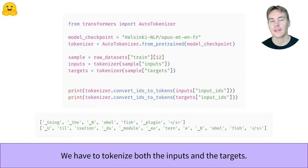There is a trap there though, as if you tokenize your targets like your inputs, you will hit a problem. Even if you don't speak French, you might notice some weird things in the tokenization of the targets. Most of the words are tokenized in several sub-tokens, while fish, one of the only English words, is tokenized as a single word.